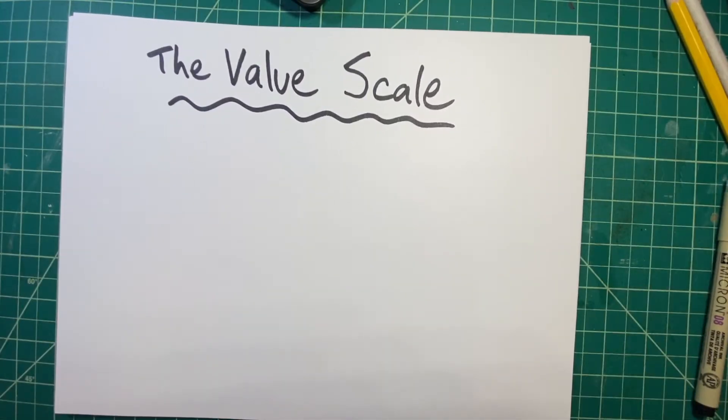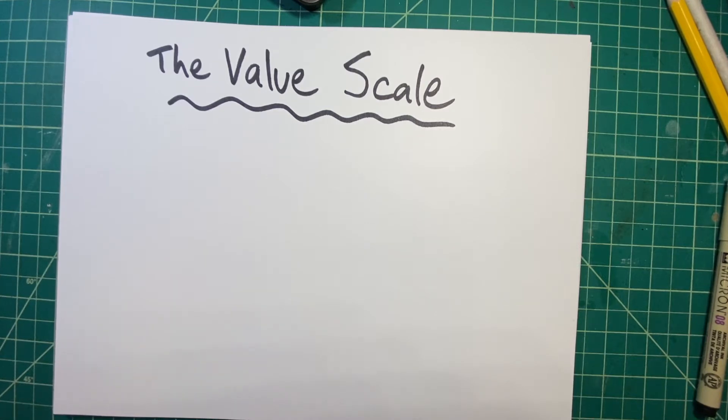In this video, I'll be going over the value scale, or a system of creating marks that progressively get darker. This is a useful trick that artists use to cross-reference their mark-making to see what should be darker and lighter based on a common base.